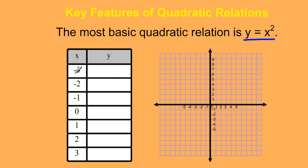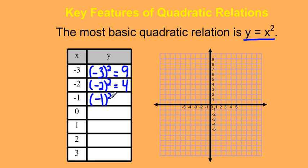If we sub in negative 3 for x, we get y equals negative 3 squared. Negative 3 squared is just negative 3 times negative 3, which gives us positive 9. If we sub in negative 2 for x, we get negative 2 squared, which gives us 4. Subbing in negative 1 gives us negative 1 times negative 1, which is positive 1. And if we put 0 in for x, we have y equals 0 squared, which is 0.